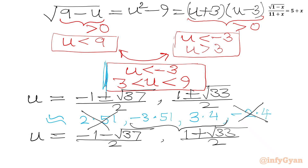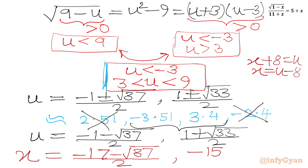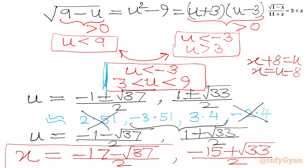Now we calculate the value of x. Our substitution was x plus 8 equals u, so x equals u minus 8. Subtracting 8 from the first accepted u value: (minus 1 minus square root of 37) over 2 minus 8 gives (minus 17 minus square root of 37) over 2. Subtracting 8 from the second: (1 plus square root of 33) over 2 minus 8 gives (minus 15 plus square root of 33) over 2. So these are our two solutions.